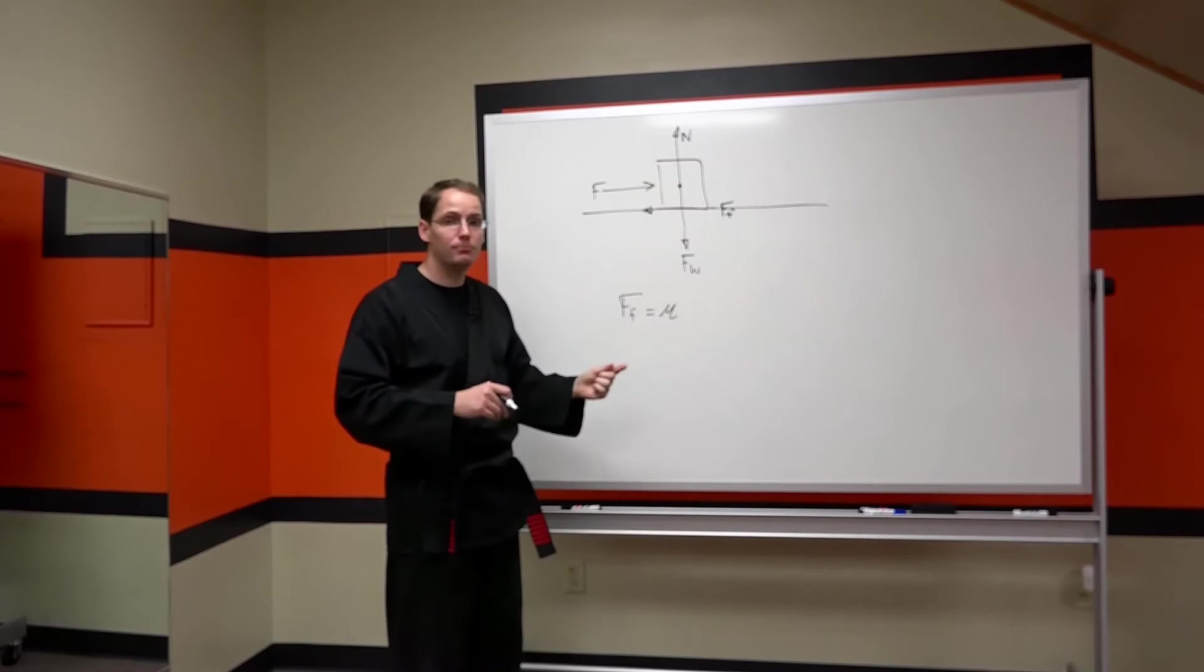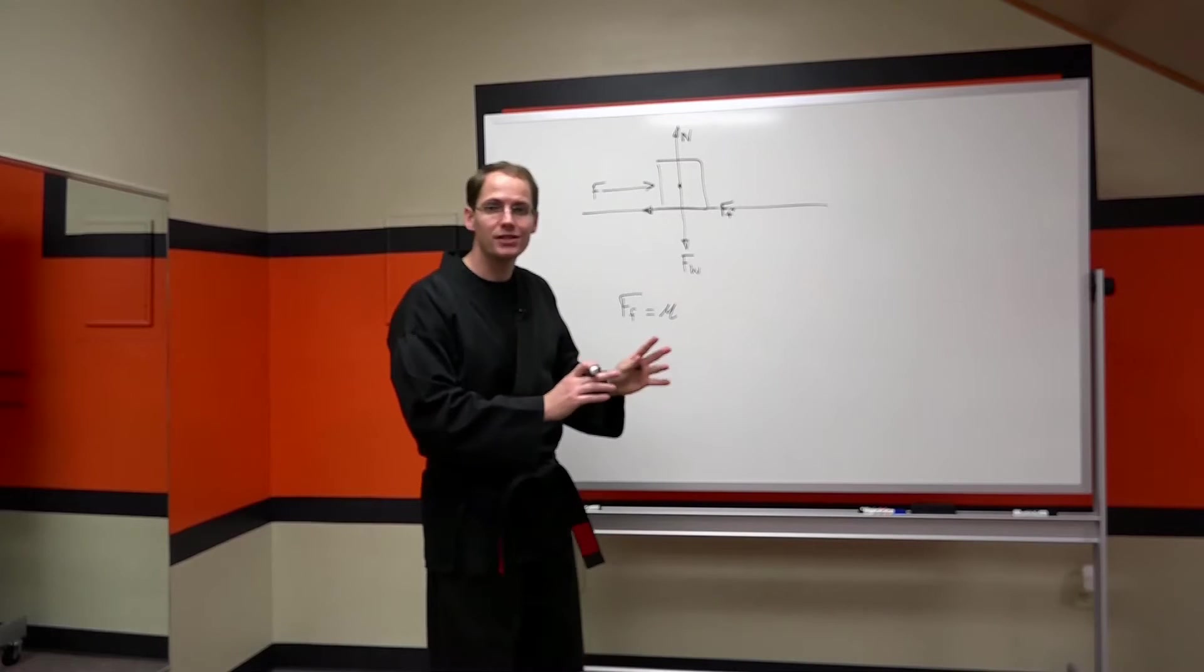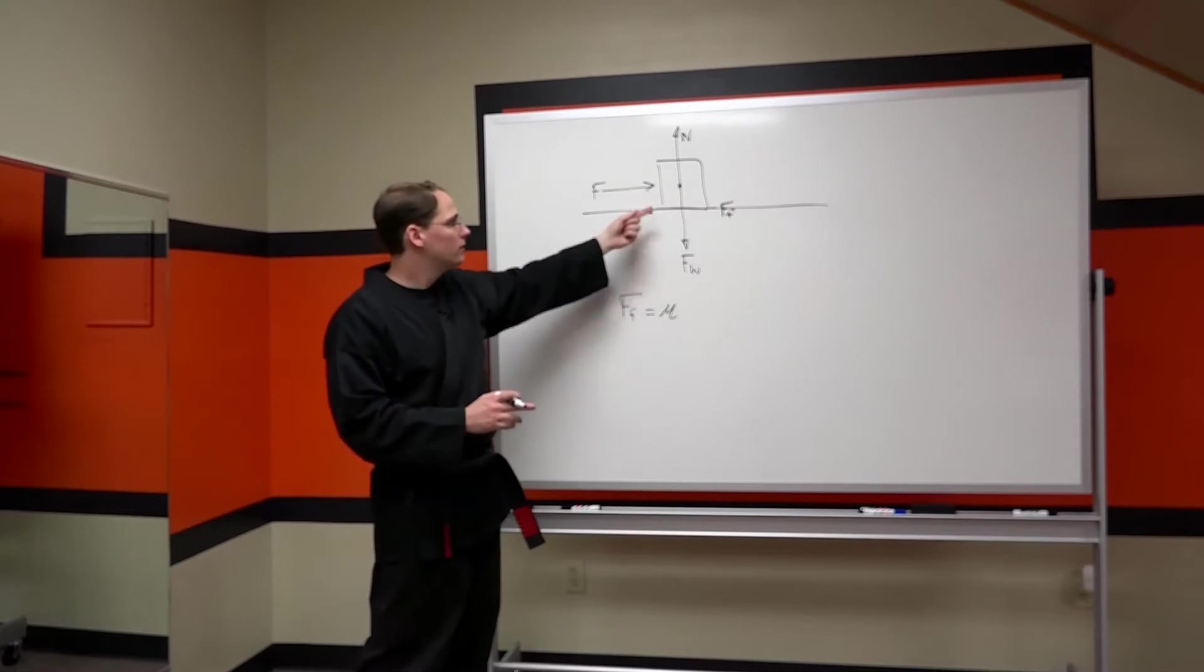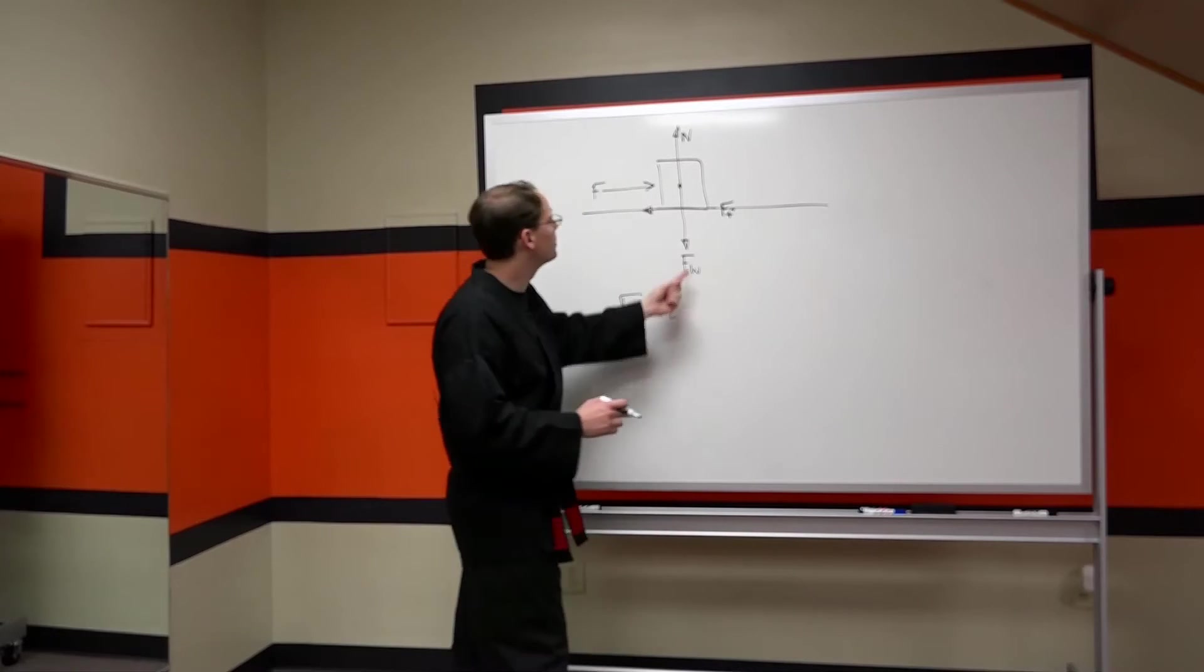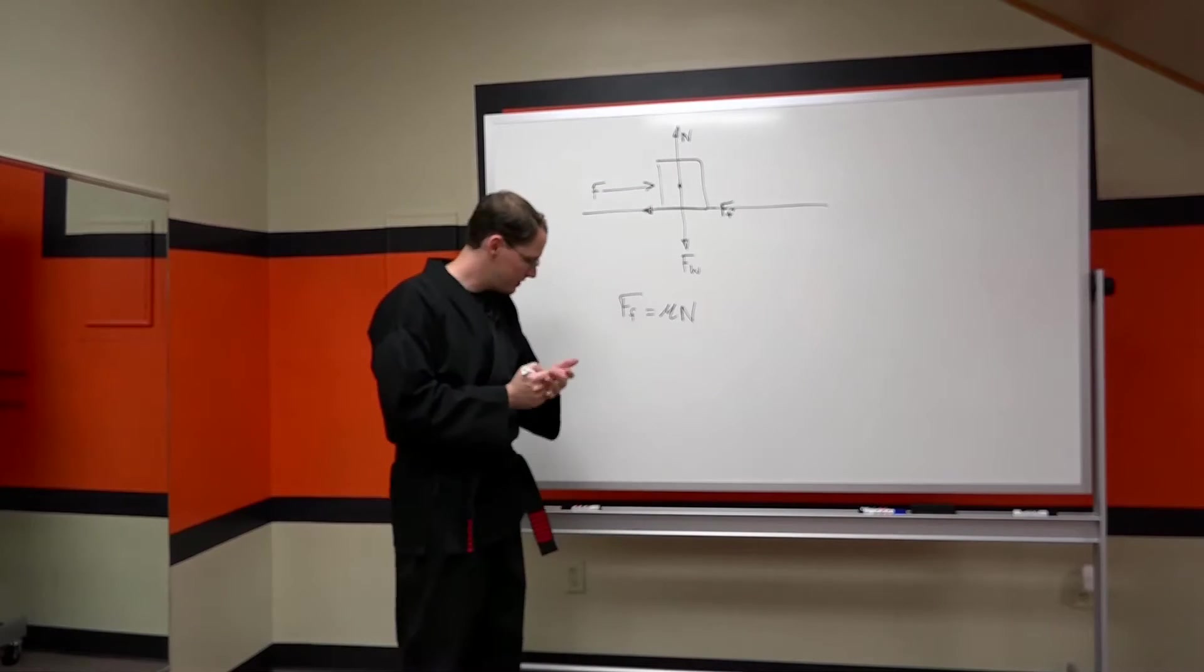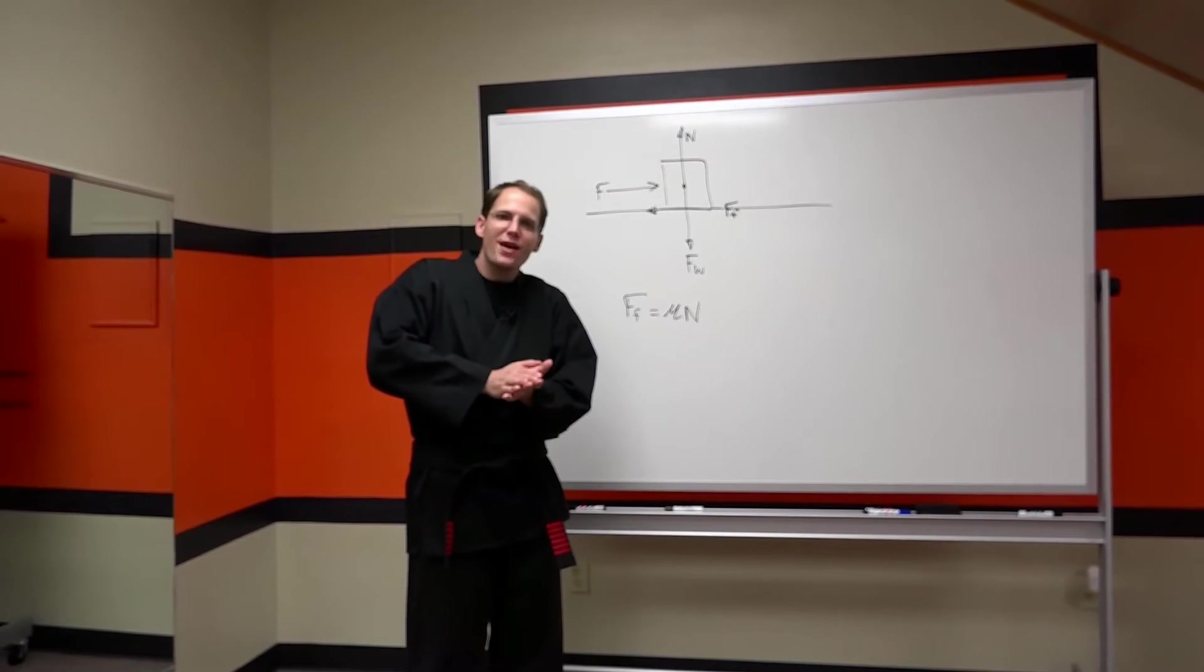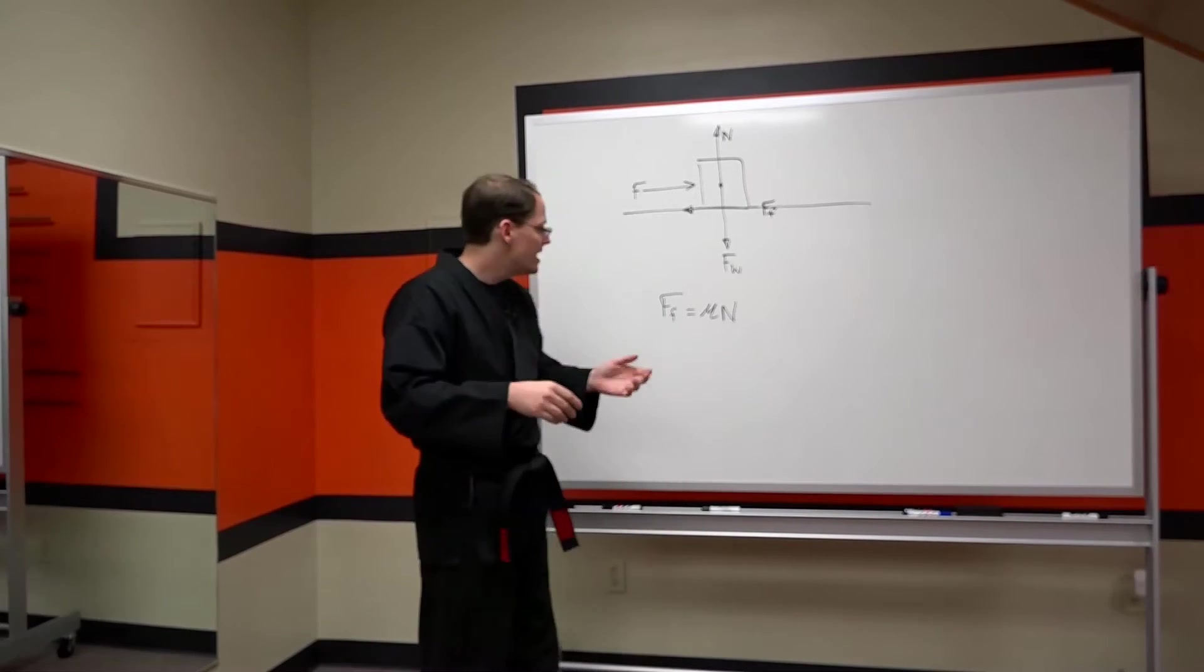Now imagine I'm pushing on this box and Justin comes along. He wants to make my job more difficult and he applies a downward force on the box. The friction force is going to now increase. So what is it that goes here? That's the normal force. That's the reaction force between the two surfaces. Another way that you can illustrate this is just placing your hands together, rub them back and forth, press them together harder, rub them back and forth, and you're going to feel the friction force increases.